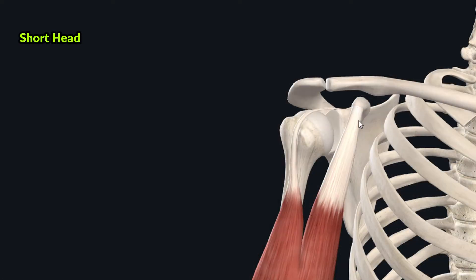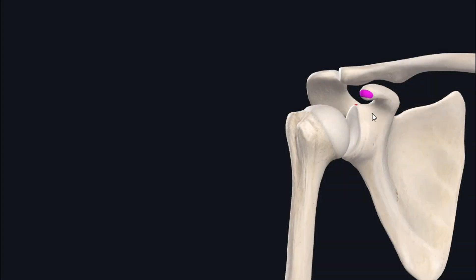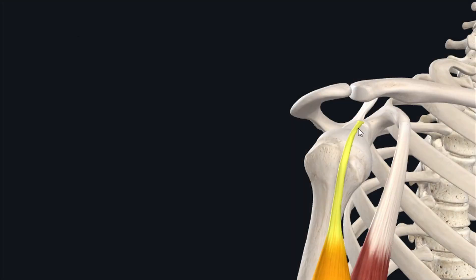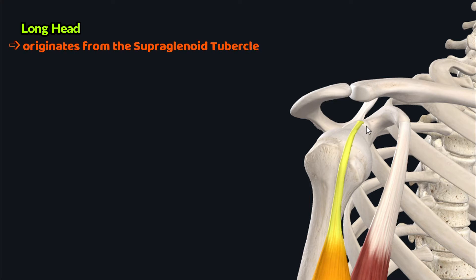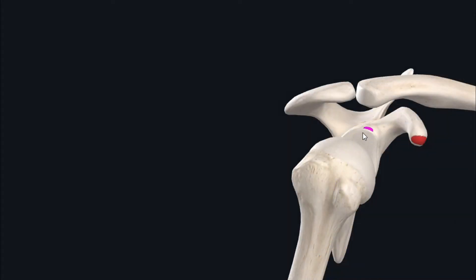The short head of the biceps brachii originates from the coracoid process of the scapula. The coracoid process is an anterior projection which comes off the lateral angle of the scapula. The long head of the biceps brachii originates from the supraglenoid tubercle, which is a tubercular structure on the superior facet of the glenoid fossa of the scapula.